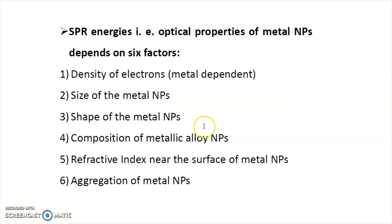Third is the shape of the metal nanoparticles. Previously we just considered spherical shapes, but if you change the shape from spherical to non-spherical — that is from symmetric to non-symmetric — then there is definitely a change in the color of these nanoparticles.